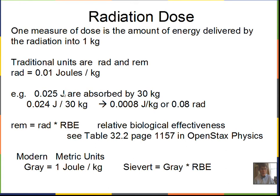For example, if we have 0.024 joules deposited in 30 kilograms, that gives 0.0008 joules per kilogram. Since one rad equals 0.01 joules per kilogram, we divide 0.0008 by 0.01 to get 0.08 rads. To calculate the dose: compute joules per kilogram, then divide by 0.01 to convert into the rad unit.